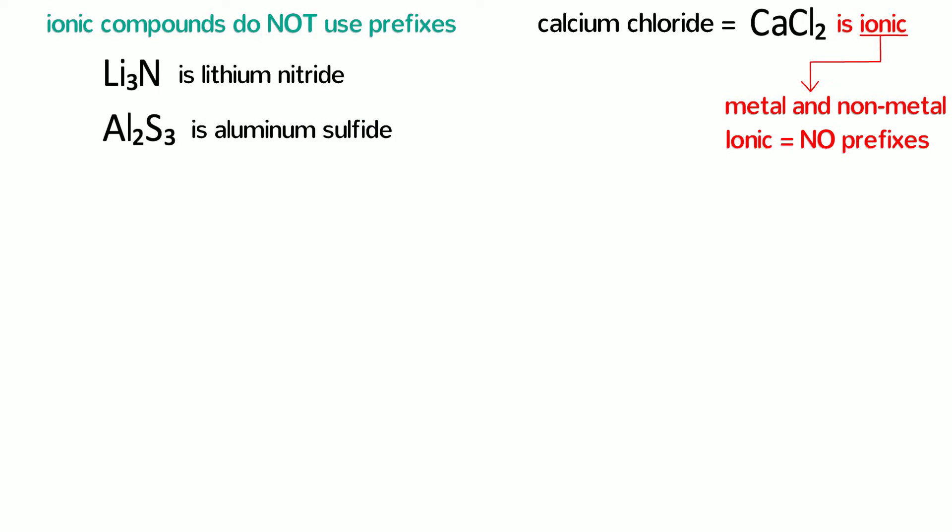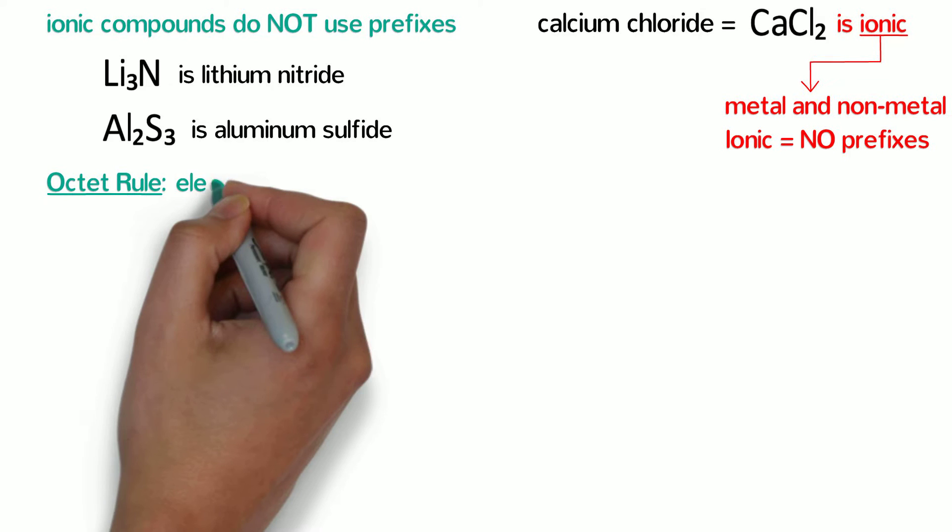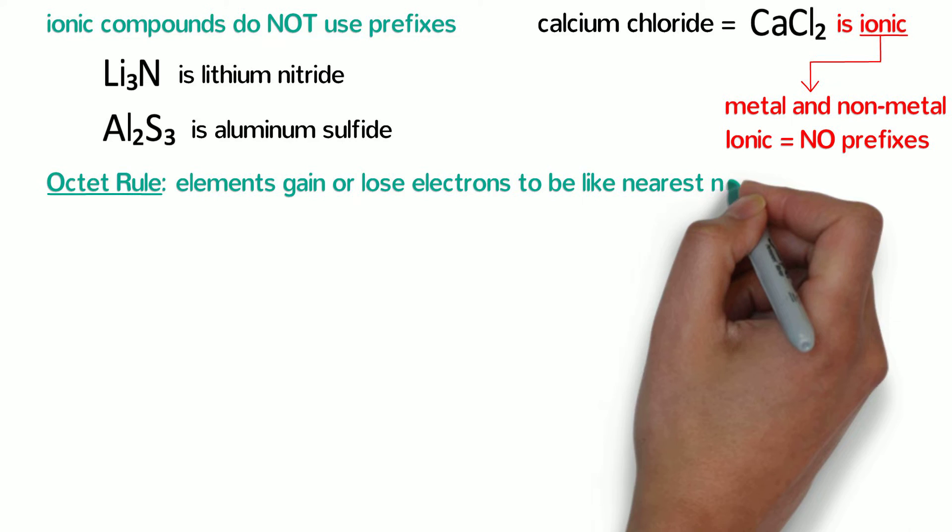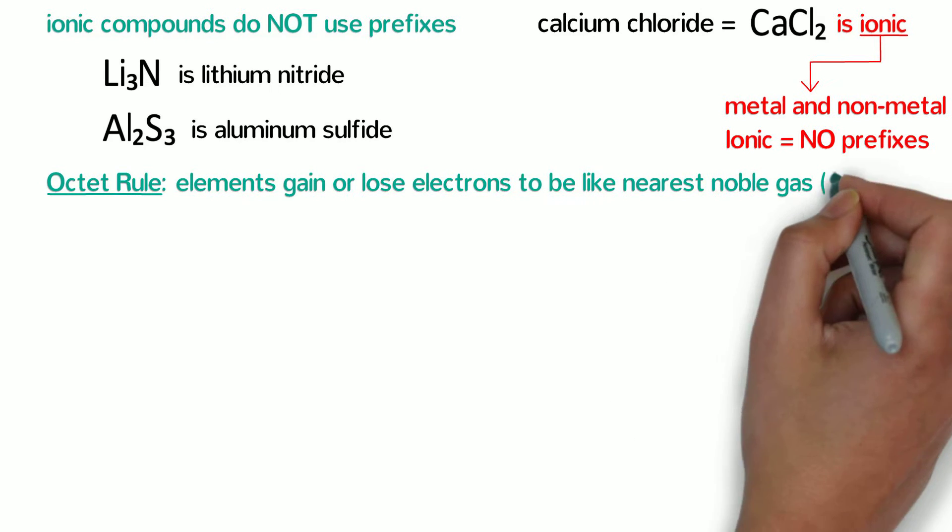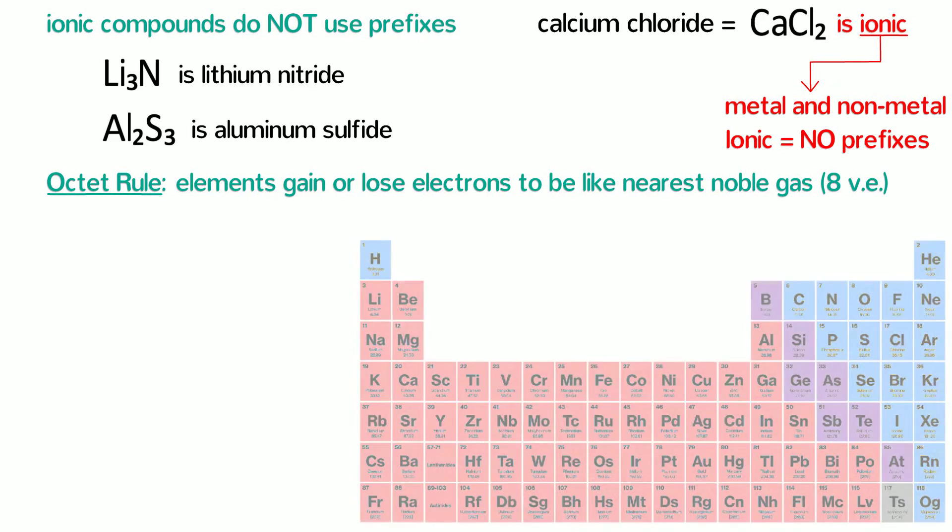But how can you figure out the formula from the name without prefixes? We can use the octet rule. The octet rule basically states that main group elements tend to gain or lose electrons to have the same number of electrons as the nearest noble gas, which is typically 8 valence electrons. So in forming ionic compounds, elements with 1, 2, or 3 valence electrons will lose all their valence electrons.